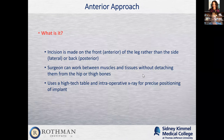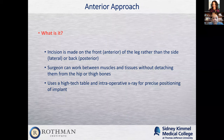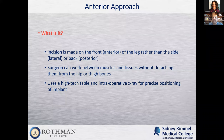One way that we do hip replacements at the Rothman Institute is what's called an anterior approach. Classically, if you see people with hip replacements, they'll have incisions on the side or back of their hip. When we work from the front of the hip, we can go between muscles and tissue without detaching them from the hip or thigh bone or without cutting muscle, and that allows us to get into the hip joint and hopefully cause less soft tissue damage.